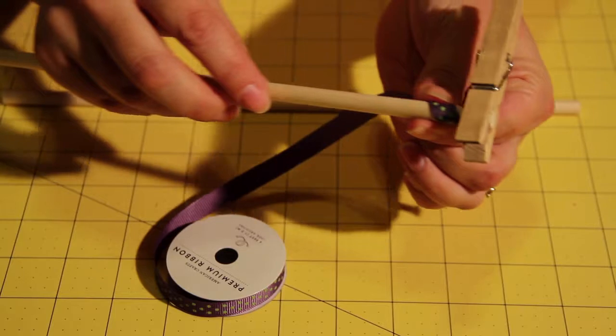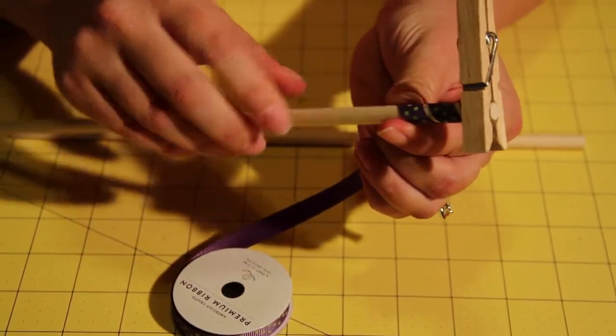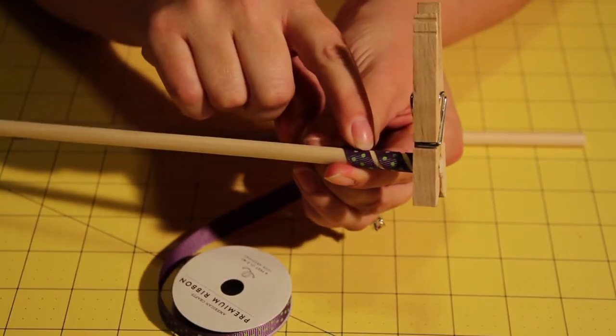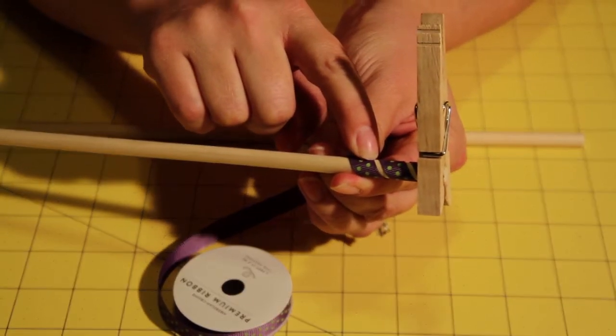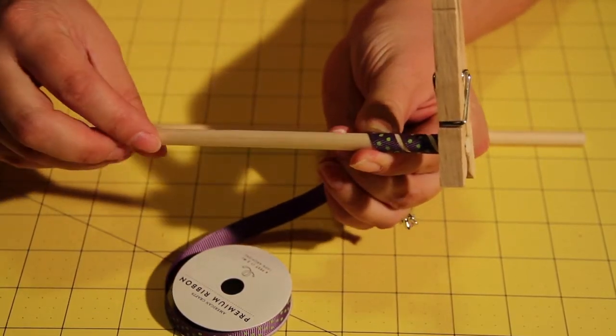And then as you twist the ribbon around the dowel you want to make sure that you are leaving a gap in between the ribbon so that the ribbon does not melt to itself when it is baking in the oven.